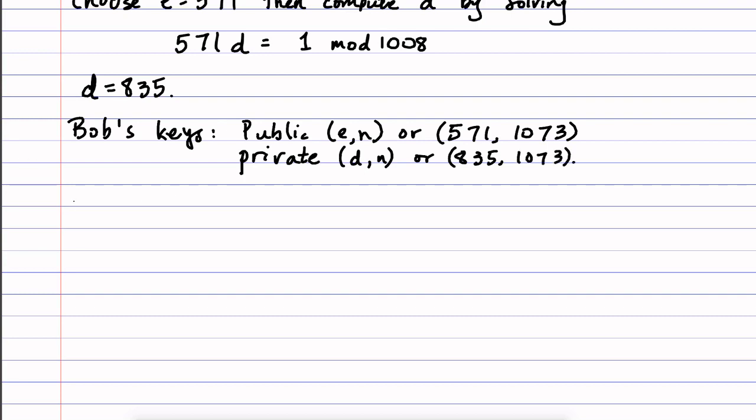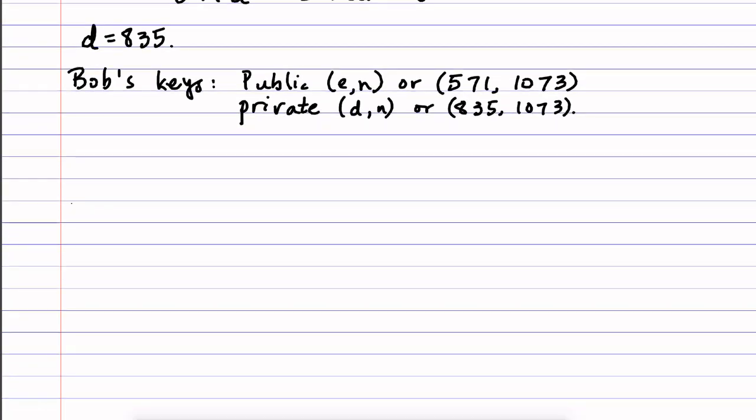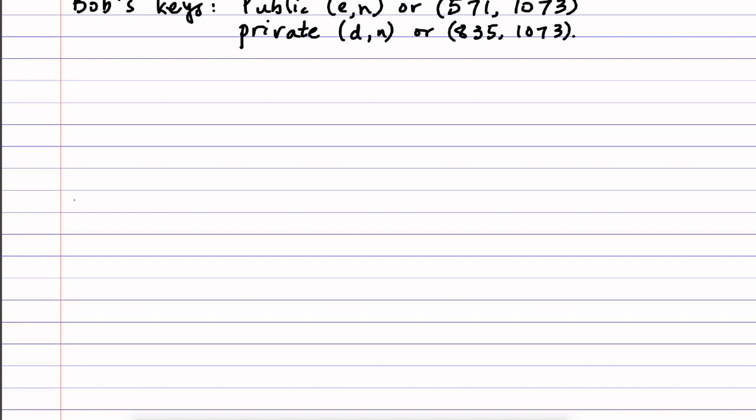Now with that set up, we're ready to go on to sending messages to one another. And here's how that's done. So Alice wants to send a message. Let's say her message is some integer m = 331.